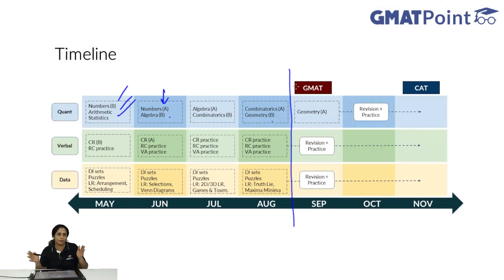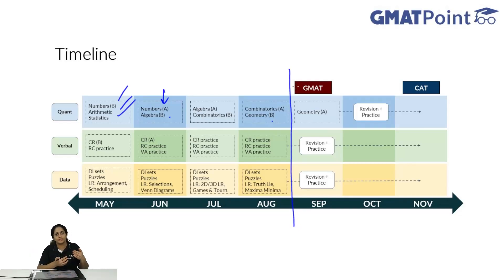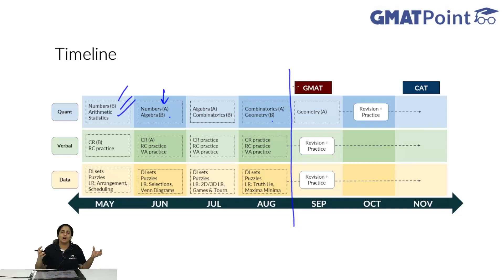From September onwards, you can focus more on practice and especially more on solving harder questions. This is the basic idea of how you can more efficiently prepare for both exams. Order your preparation such that you can give the GMAT exam by the end of August, get your CAT basics done by then, and from that point on — after your GMAT exam is over — just focus on solving harder and harder questions from CAT. This is basically how I would suggest combining your preparation for both of these exams.